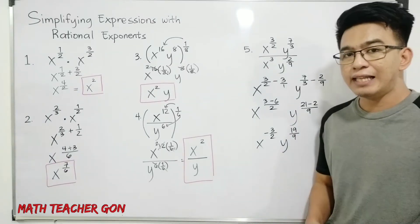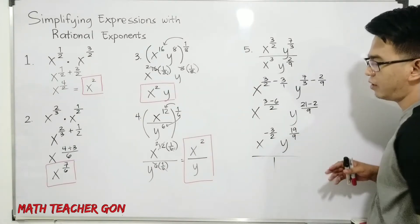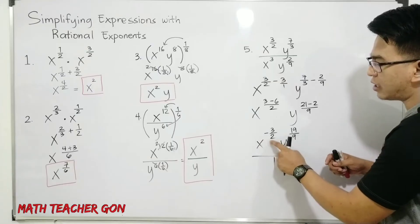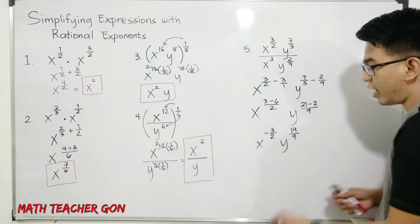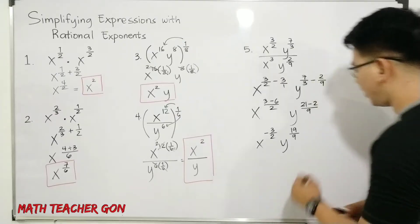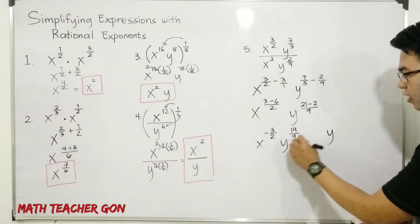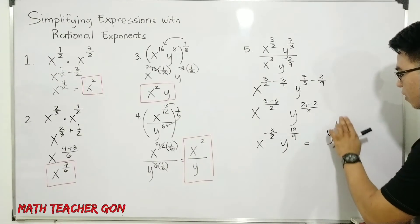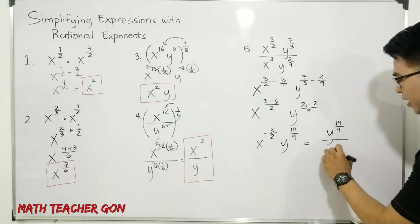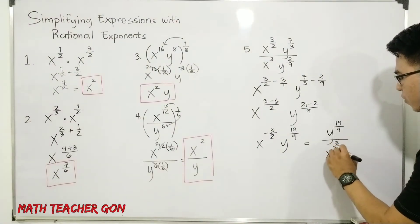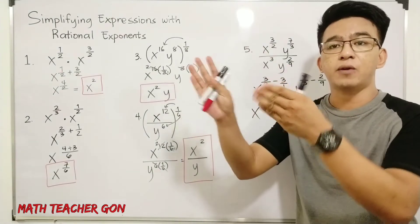To make the negative exponent positive, we need to apply the negative exponent law. Since x raised to negative 3 over 2 is in the numerator, we transfer it to the denominator, making the exponent positive. So the final answer for item number 5 is y raised to 19 over 9, over x raised to 3 over 2. From a negative exponent, it became positive once we changed its position from numerator to denominator.